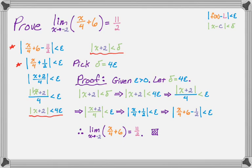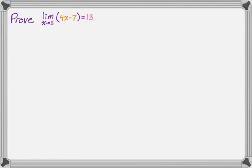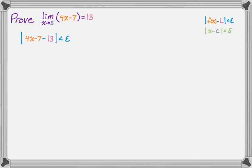Let's take a look at the second problem. We want to prove that the limit as x approaches 5 of the quantity 4x minus 7 is equal to 13. It's going to be the exact same process — linear functions always follow the same process. So I write down the two inequalities from the limit definition: the absolute value of f(x) minus L less than epsilon, and the absolute value of x minus c less than delta. Rewriting in context: the absolute value of 4x minus 7 minus 13 is less than epsilon, and the absolute value of x minus 5 is less than delta.